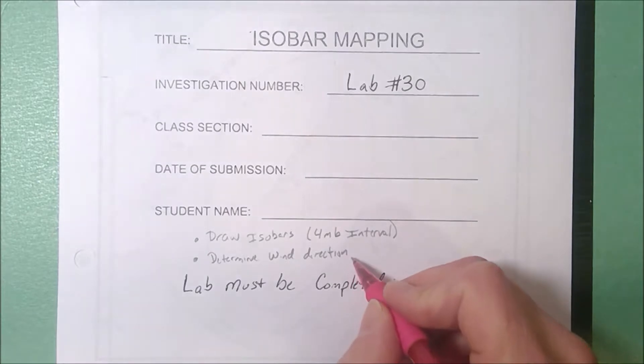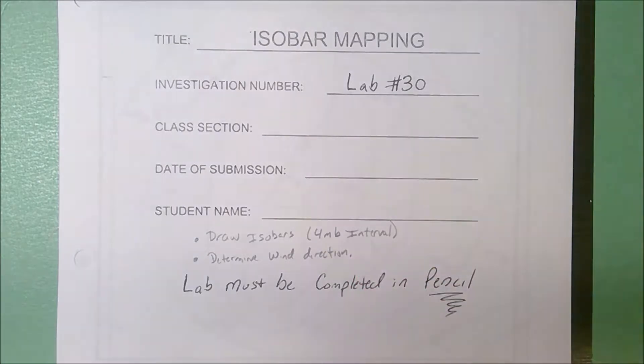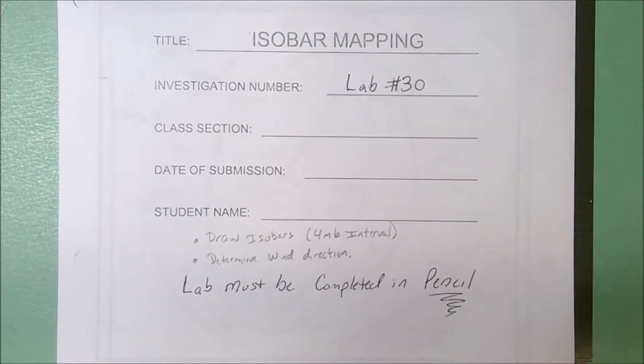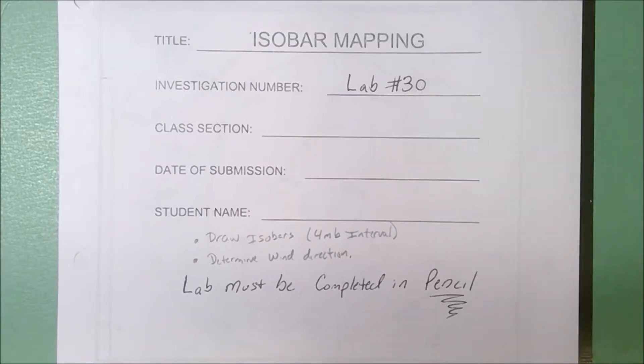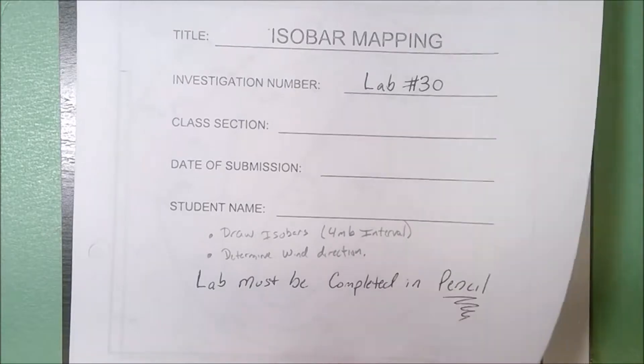Since all of this is in the northern hemisphere, we're assuming it's the northern hemisphere that's going to bend or deflect winds to the right, and we're going to show those on the station models that are indicated on the isobar maps.